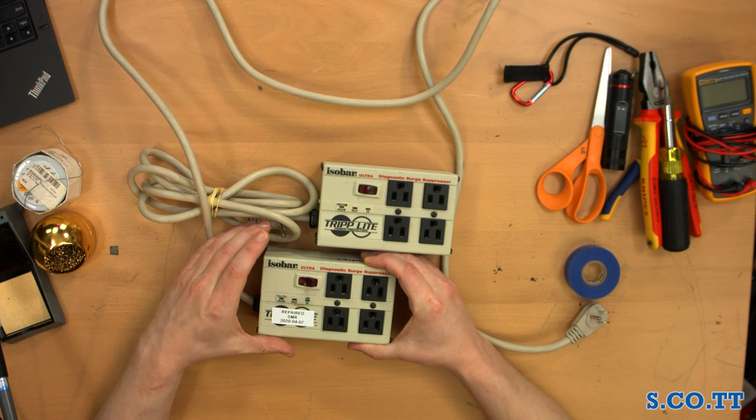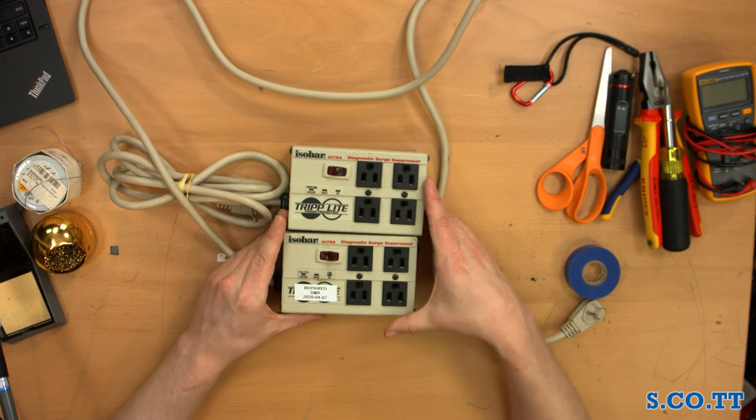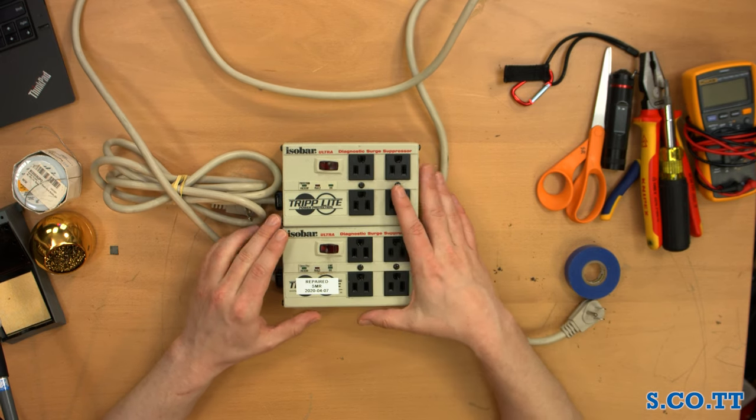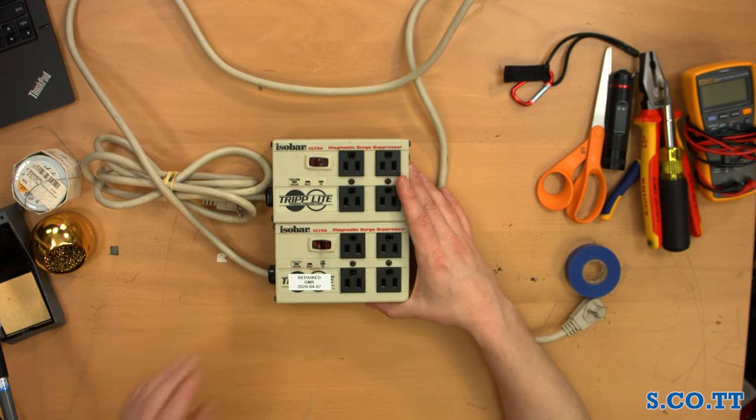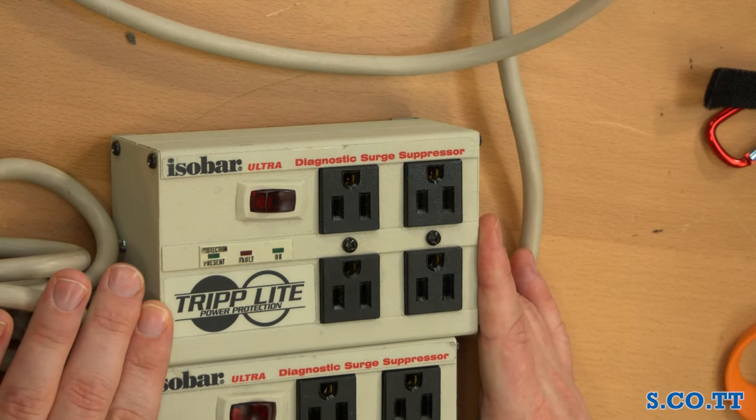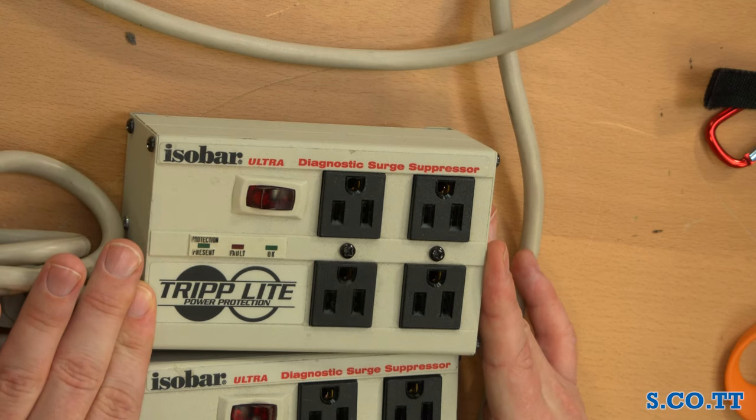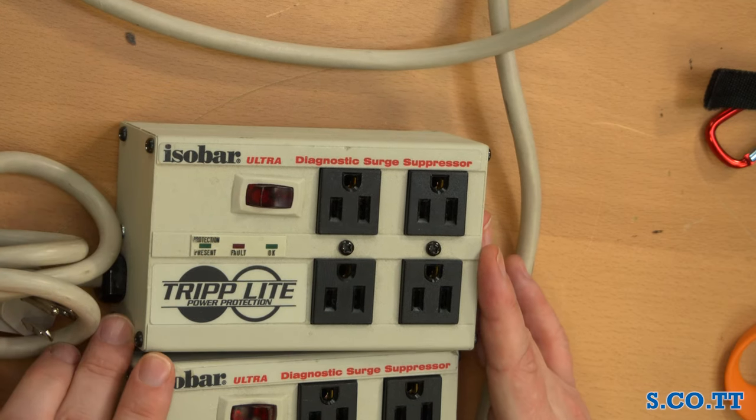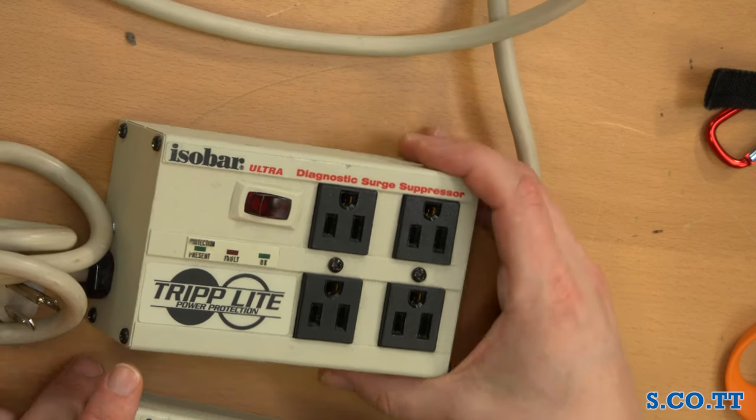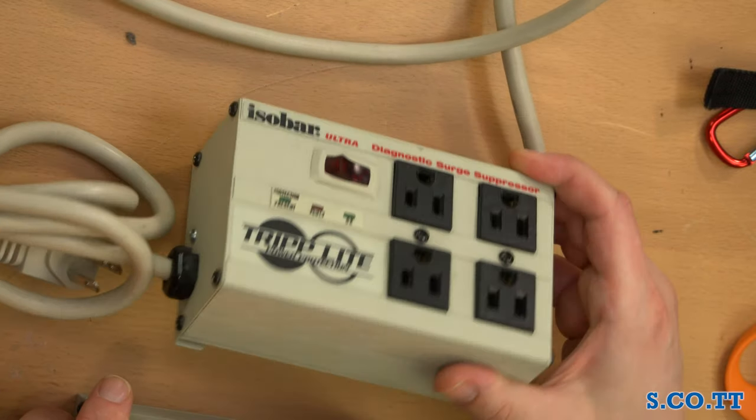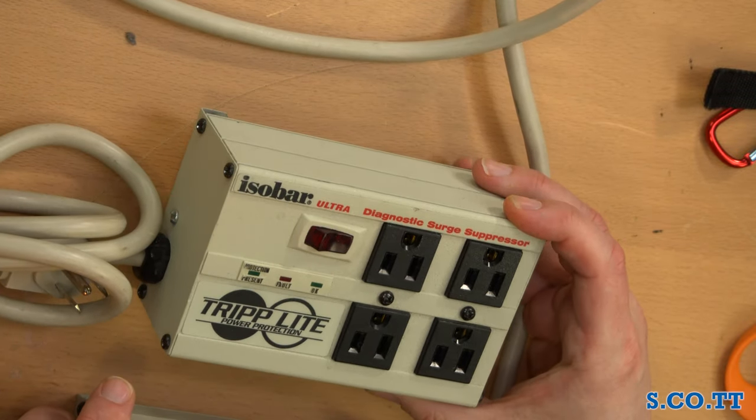In this case I had purchased from the famous eBay, who's a guy I know, four of these Triplite four receptacle power strips or as they're called by Triplite, Diagnostic Surge Suppressor Isobar Ultra. I don't know, whatever, I'm not too familiar with their model range, but these are very old. Not like the oldest ones you can get, but on the older end of things.